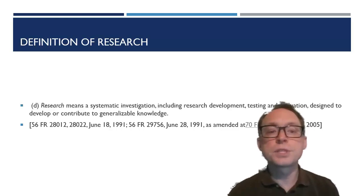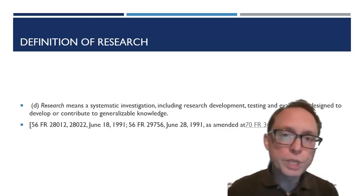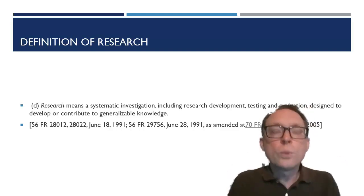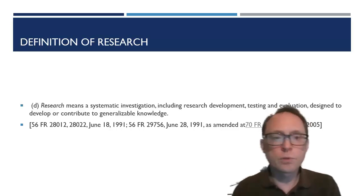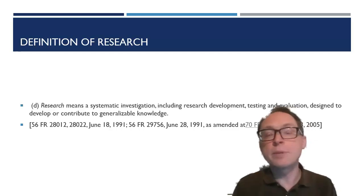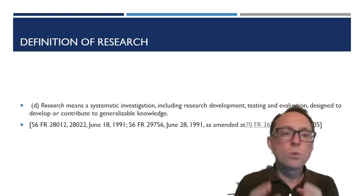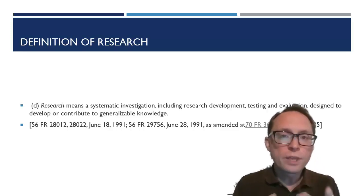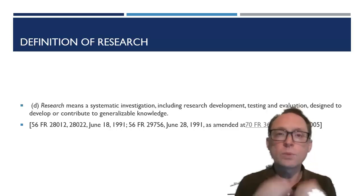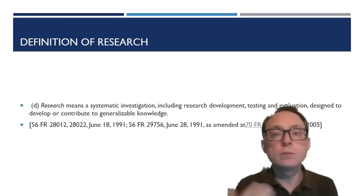The Common Rule says that research means a systematic investigation, including research development, testing, and evaluation designed to develop or contribute to generalizable knowledge. This is a big deal, because what we think of as research depends on this. When we talk about human subjects research specifically, we're talking about systematic investigation designed to contribute to generalizable knowledge — normally things that will be published, such as empirical journal articles or meta-analyses.